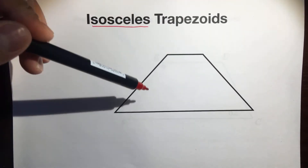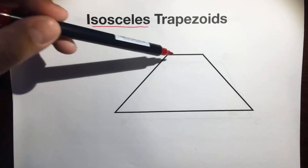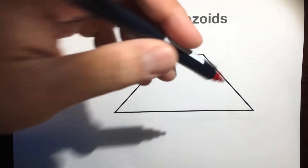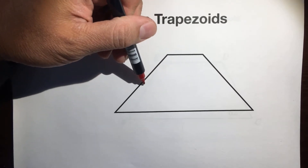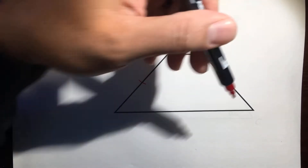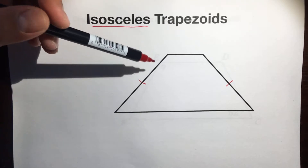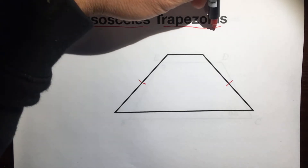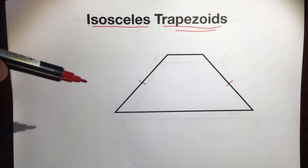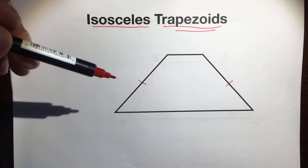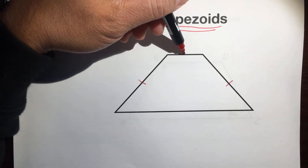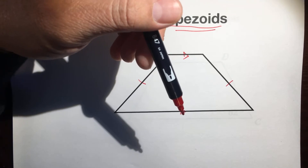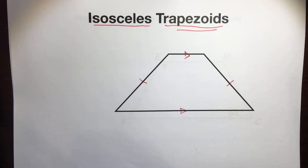Now let's look at this trapezoid. This side definitely doesn't look like it's congruent to this side, but this side looks like it's congruent to this side. So how do we show that? Let's put a tick mark here and a tick mark here — that means this is isosceles, two sides are congruent. And because it is a trapezoid, two sides are parallel, so let's mark those with arrows as a refresher from the previous video.